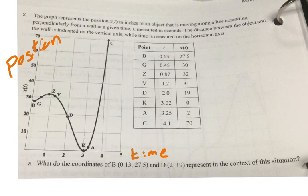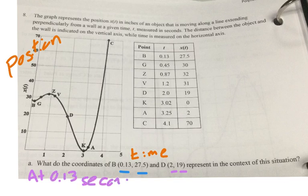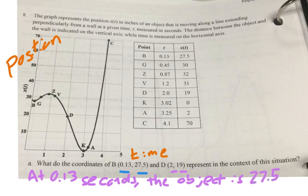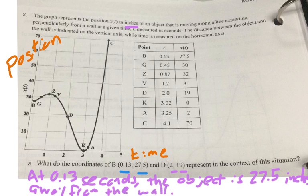So it says, part A, what do the coordinates of B, being at 0.13 and 27.5, and D, being at 2.19, represent? This means at 0.13 seconds, because X is time. So at 0.13 seconds, the object is, and then what did the Y represent? It is the distance between the object and the wall. So at 0.13 seconds, the object is 27.5 inches away from the wall. And hopefully you can do the same for D. D means 2 seconds in. The object was 19 inches from the wall.